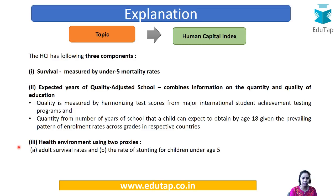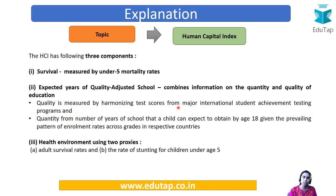The HCI has three components. The first is survival, measured by the mortality rates of under-five children — that is, for children who are born, what is the mortality rate before reaching age five. The second is expected years of quality adjusted schooling. Quality adjusted means not only the number of years a person has spent in school, but also the quality of education attained. The two parameters under this are quality — measured by test scores from various international achievement reports — and quantity, which is the number of years spent in school.